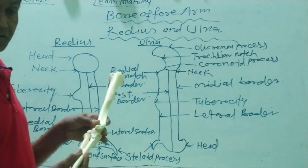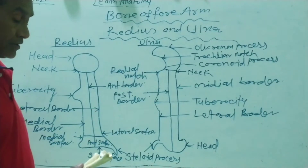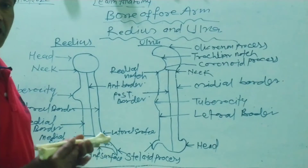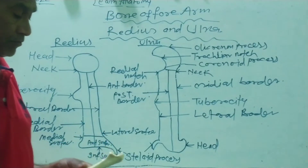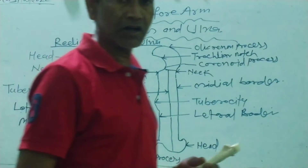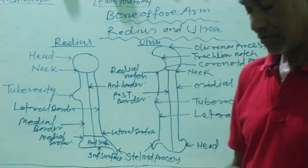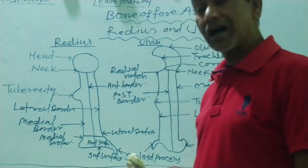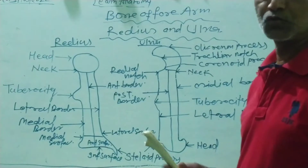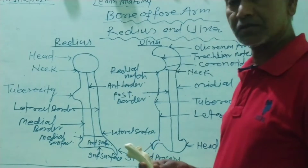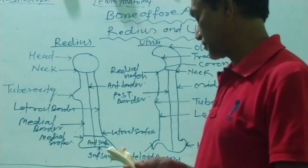Inferiorly, the radius and ulna articulate with the bones of the wrist, or carpal bones, forming the wrist joint.